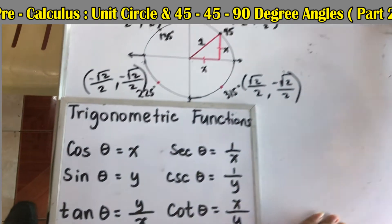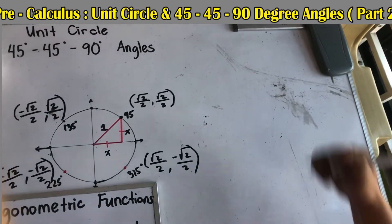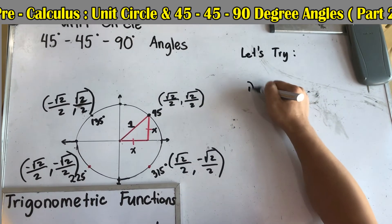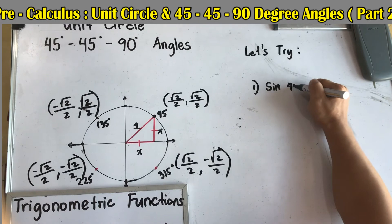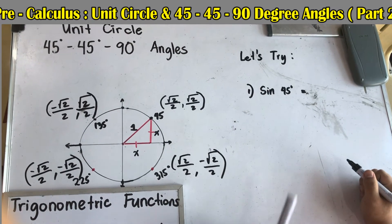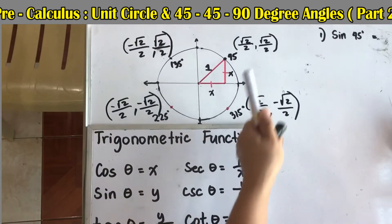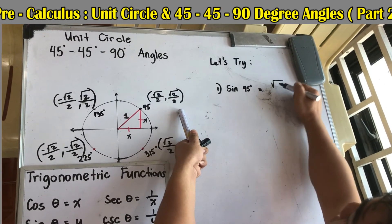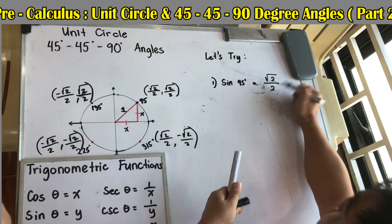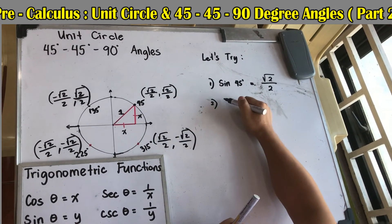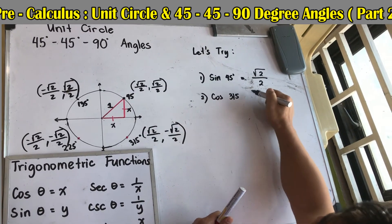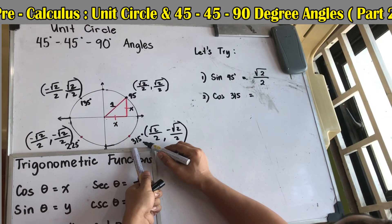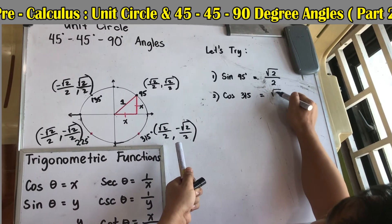Let's solve some examples. Number one: sine 45°. Sine gives us the y-value. At 45°, the coordinates are (√2/2, √2/2), so sine 45° = √2/2. Number two: cosine 315°. Cosine gives us the x-value. At 315°, x = √2/2, so cosine 315° = √2/2.